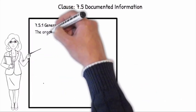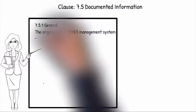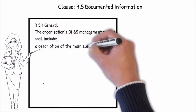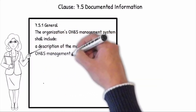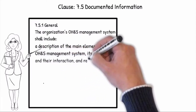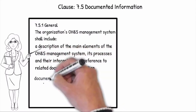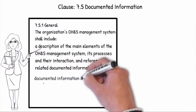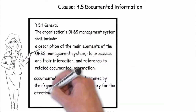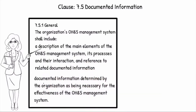7.5.1 General: The organization's OHS management system shall include a description of the main elements of the OHS management system, its processes and their interaction, and reference to related documented information, as well as the documented information determined by the organization as being necessary for the effectiveness of the OHS management system.